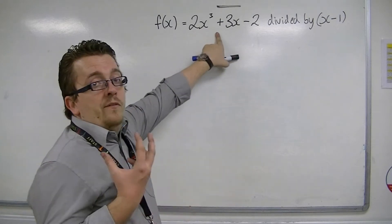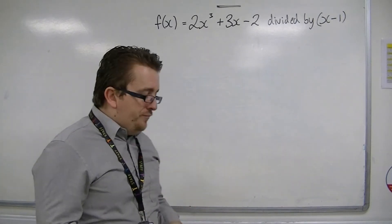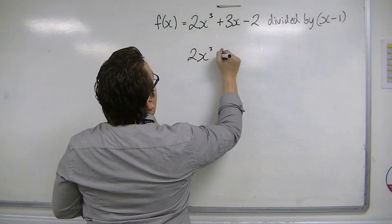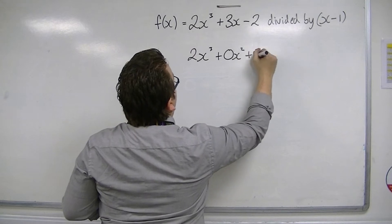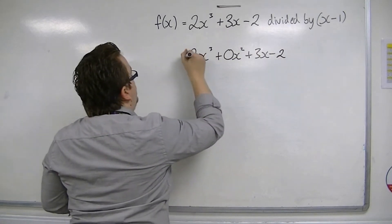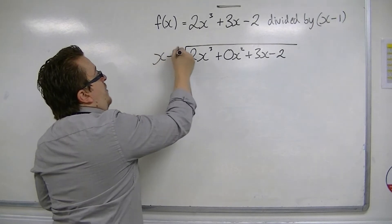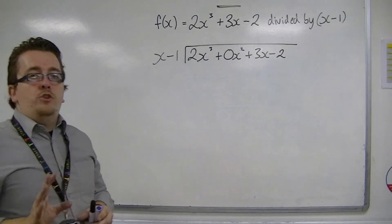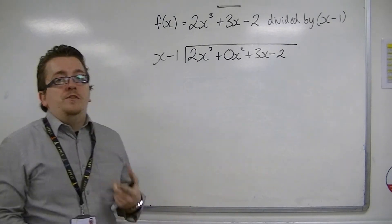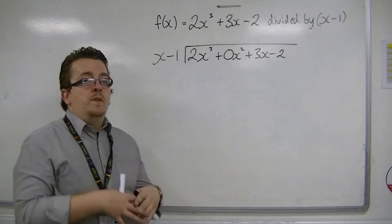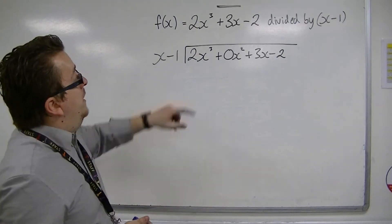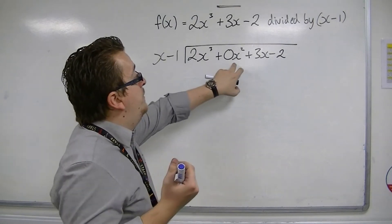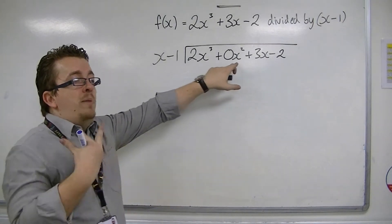So effectively, you have 0x squared, and you must include that 0x squared inside the division. If you don't, then things will go wrong. The reason being is that the columns will not match up, and then you will get confused, and in all likelihood, you'll get a wrong answer at the end.